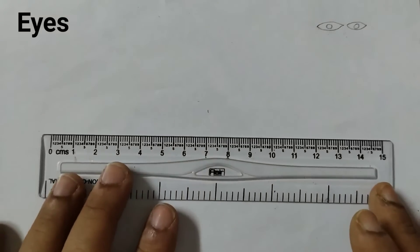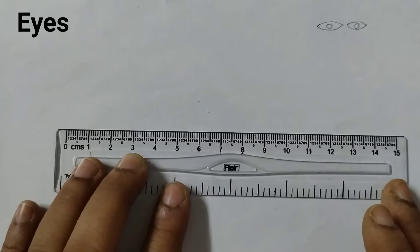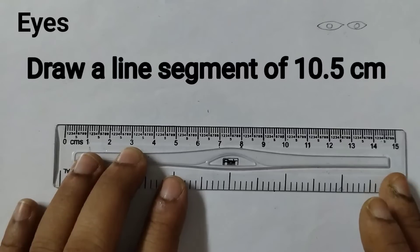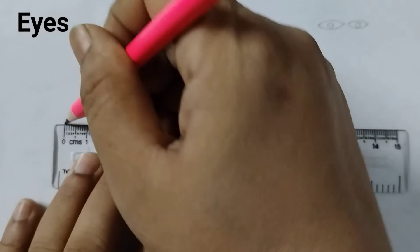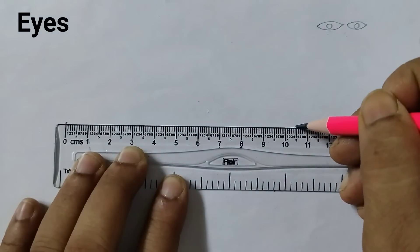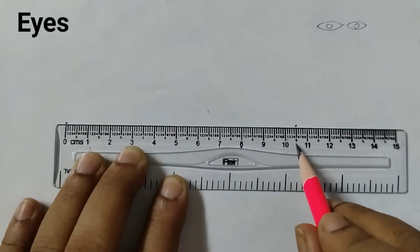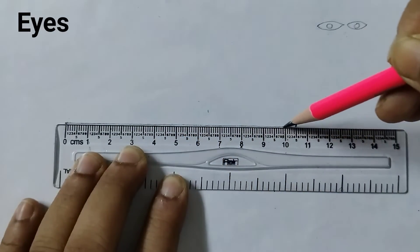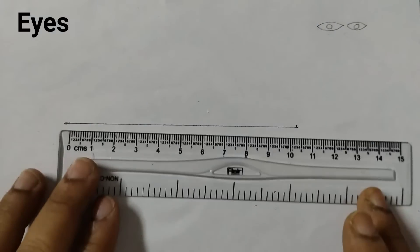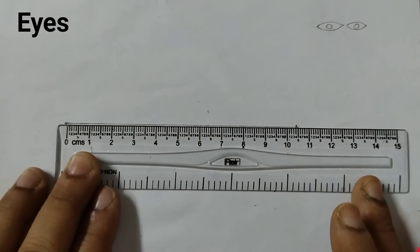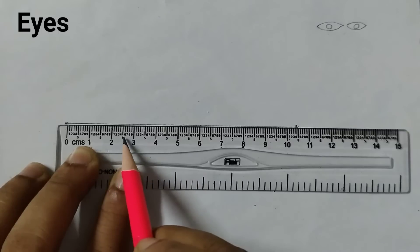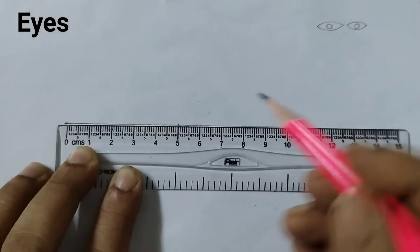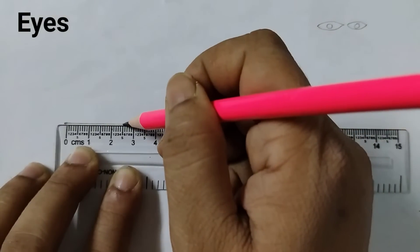First take a ruler and draw a line segment of 10.5 cm. I will put a marking at 0 and 10.5. We will join these two points. Next, we will do a marking at 2.5 and 5.